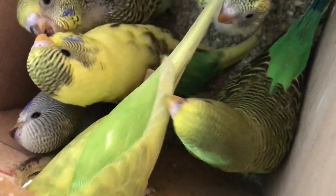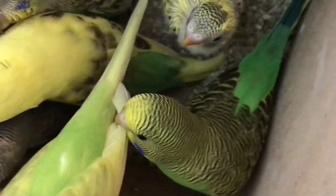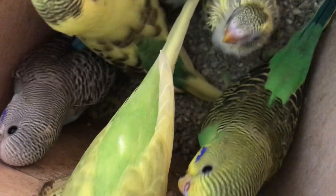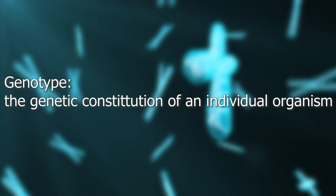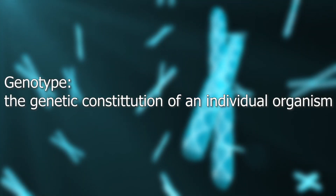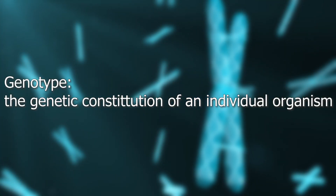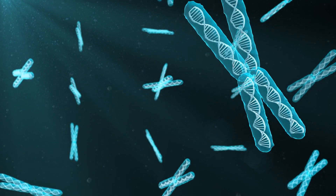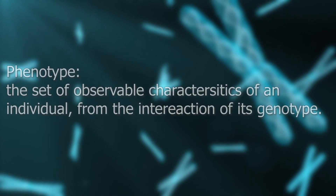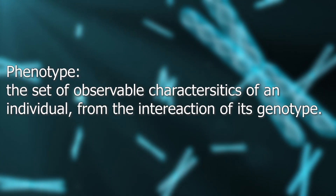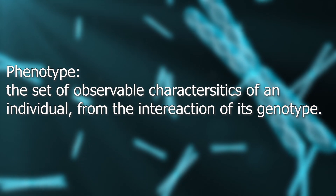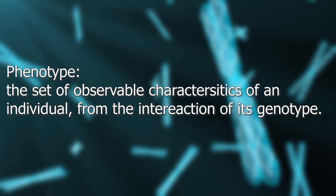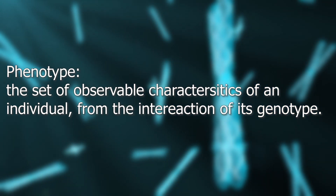Wait — you might have forgotten what genotype and phenotype are. The genotype is the genetic constitution of an individual organism. The phenotype is the set of observable characteristics of an individual resulting from the interaction of its genotype with the environment.